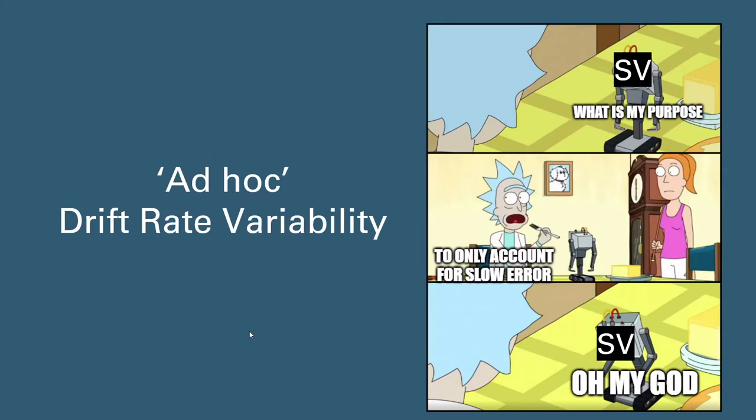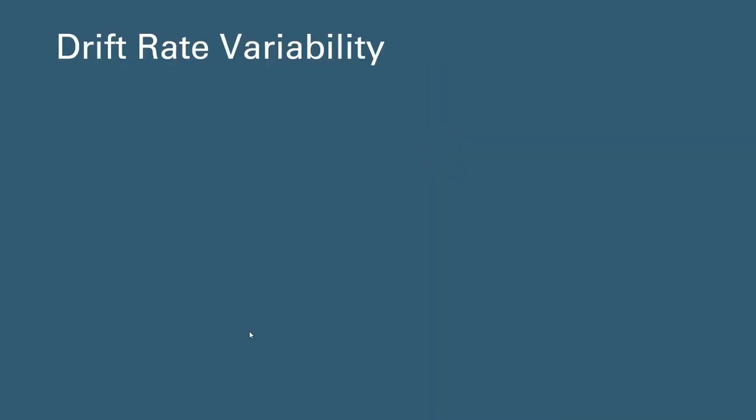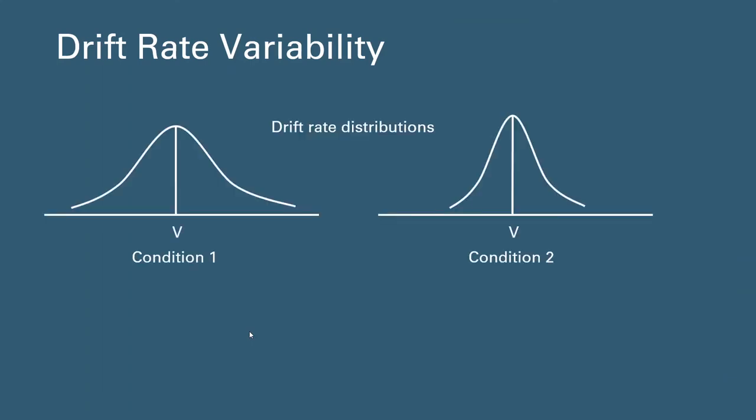However, this distributional assumption of cross-trial drift rate has been criticized for lacking meaningful psychological interpretations. In a way, it was criticized that this parameter was only partially included in the model to produce certain RT distributions. Studies mostly do not have a clear explanation or interpretation on the change of the drift rate variability parameter across conditions. This could be due to that some experimental tasks don't really have psychological theories or previous findings for variability in evidence strength across trials. However, there's a clear picture for recognition memory where evidence variability has been broadly studied between target and lures and across conditions.